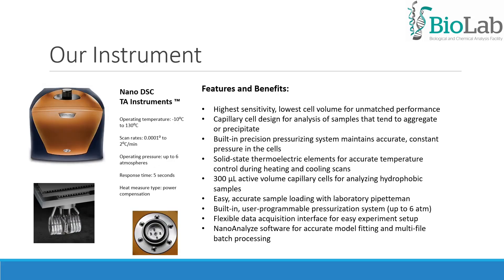Our instrument is the NanoDSC from TA Instruments. It has an operating temperature from minus 10 degrees Celsius to 130 degrees Celsius, scan rates from 0.001 to 2 degrees per minute, operating pressure up to 6 atmospheres, response time of 6 seconds, and the heat measurement type is by power compensation. This device has a capillary cell design for analysis of samples that tend to aggregate or precipitate. Cell volume is 300 µL. The NanoAnalyze software allows for accurate model fitting and multi-file batch processing.